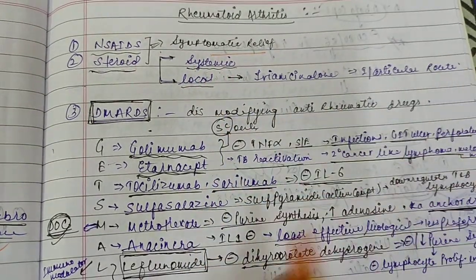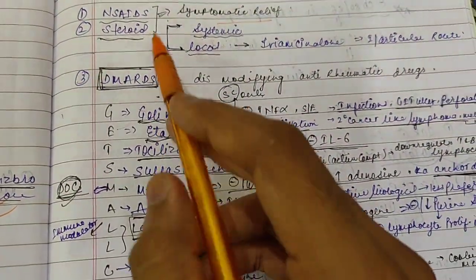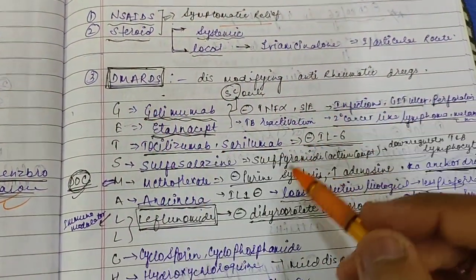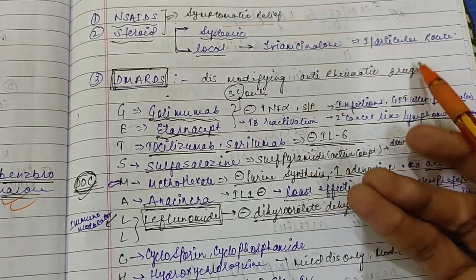STRAVAD, systemic and local, has side effects. We have discussed about STRAVAD in our different video. Now the next drug is your disease-modifying anti-rheumatic drugs.